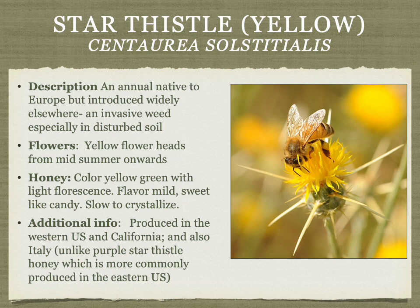Yellow star thistle is produced more in the western US, especially California. The honey is mild and sweet like candy, yellowish green in color, sometimes with a fluorescent note. It's somewhat less complex than purple star thistle, but a wonderful honey in its own right.